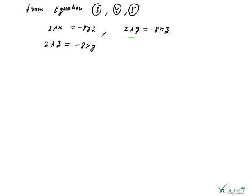A query arises: what is the benefit of these relations? We want to prove that the rectangular solid of maximum volume inscribed in a sphere is always a cube. The property of a cube is that its length, breadth, and height are all equal. So if we can prove x = y = z using these three equations, our required result is proved.